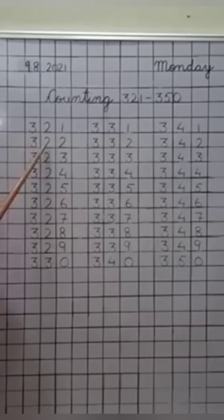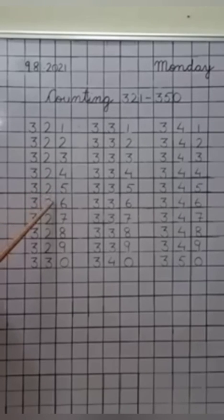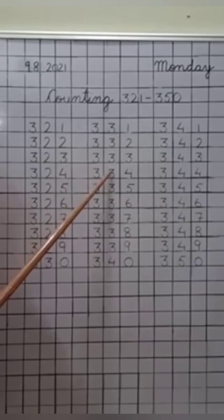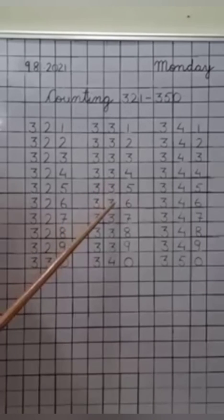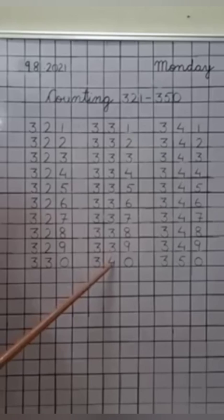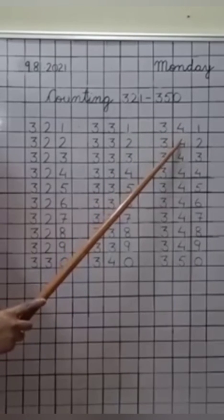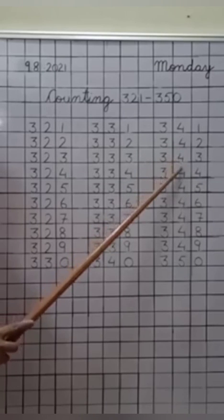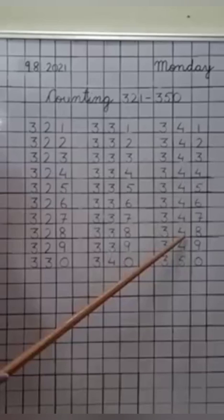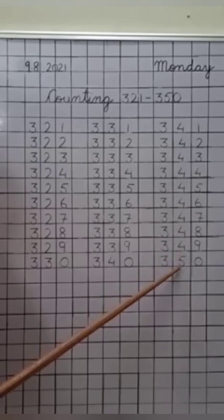Three hundred twenty-one, three hundred twenty-two, three hundred twenty-three, three hundred twenty-four, three hundred twenty-five, three hundred twenty-six, three hundred twenty-seven, three hundred twenty-eight, three hundred twenty-nine, three hundred thirty, three hundred thirty-one, three hundred thirty-two, three hundred thirty-three, three hundred thirty-four, three hundred thirty-five, three hundred thirty-six, three hundred thirty-seven, three hundred thirty-eight, three hundred thirty-nine, 340, 341, 342, 343, 344, 345, 346, 347, 348, 349, 350.